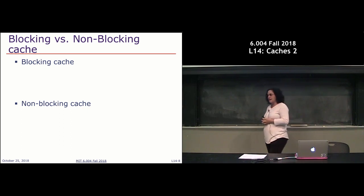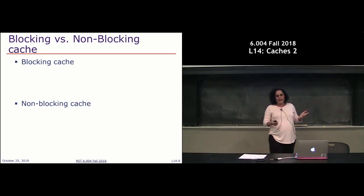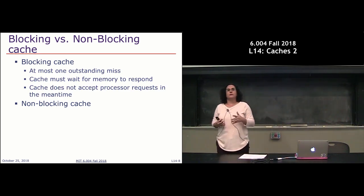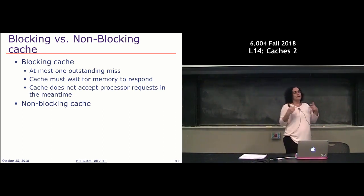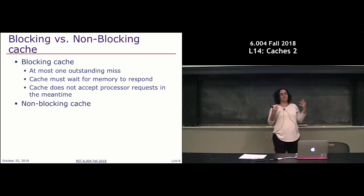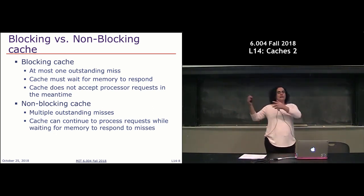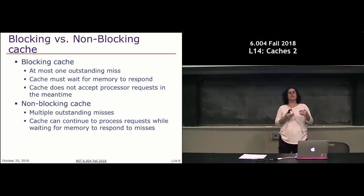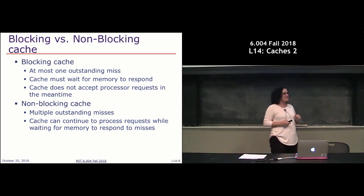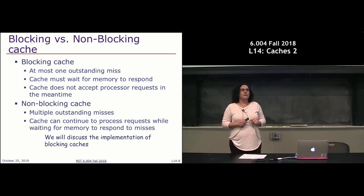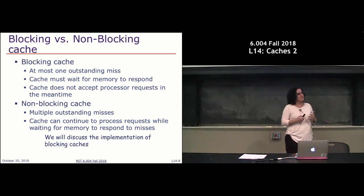One last question about caches: we can have a blocking cache or a non-blocking cache. A blocking cache can only handle one request at a time — if I get a miss and need to go to main memory, the cache can't receive a new request from the processor until done. In a non-blocking cache, multiple requests can be handled simultaneously, so while main memory processes a missed request, the cache continues responding to others. Non-blocking caches are much more complex, so we'll focus on blocking caches, which is what we're implementing.